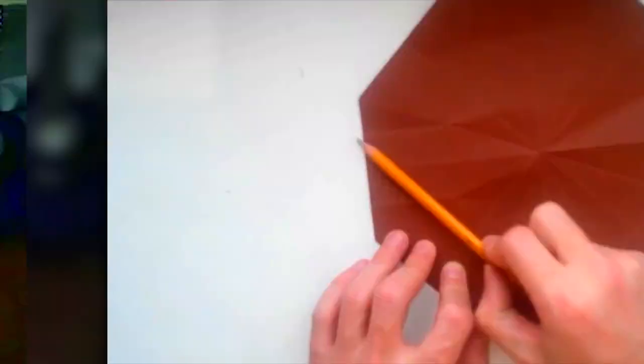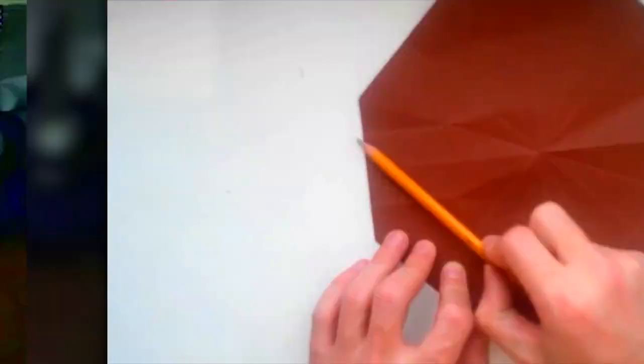The term origami comes from two Japanese words, oro to fold and kami, paper. The Chinese first invented paper making around 105 CE, and it was greatly prized, often reserved for special occasions and religious rituals.